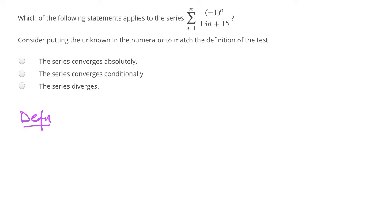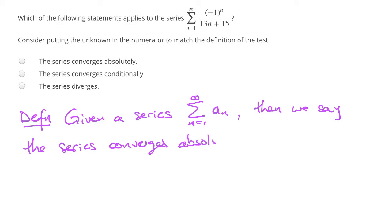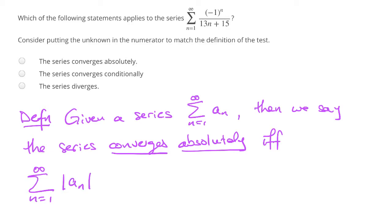The best place to start is with a couple of definitions. If we're given a series with terms a_n, then we say that the series converges absolutely if and only if we take the new series where we're taking the absolute value of the terms. If this new series converges, then that's our condition for saying that our original series converges absolutely.